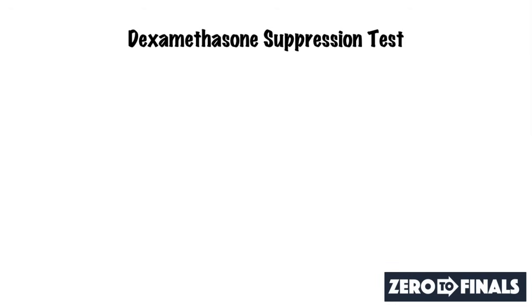Hi, this is Tom from zerotofinals.com. I wanted to go through the dexamethasone suppression test. Before we go through this test, a prerequisite is to understand the adrenal axis and the causes of Cushing's syndrome. You can check out the video I made that should explain everything you need to know.